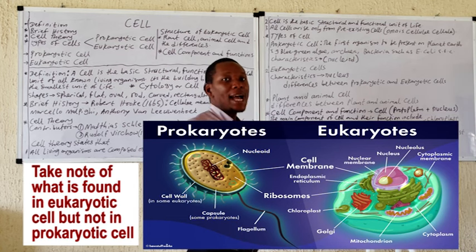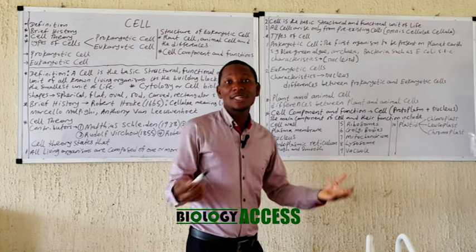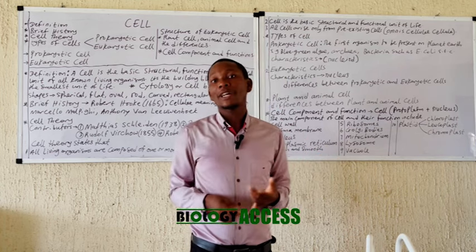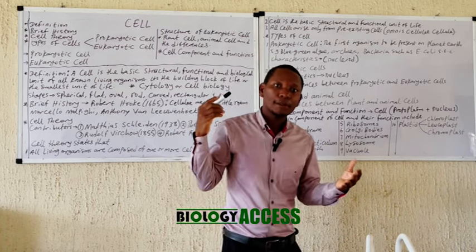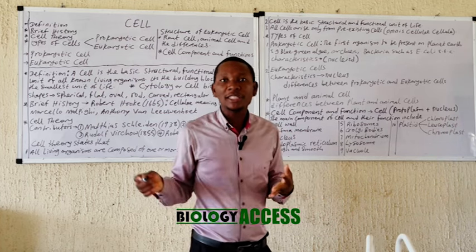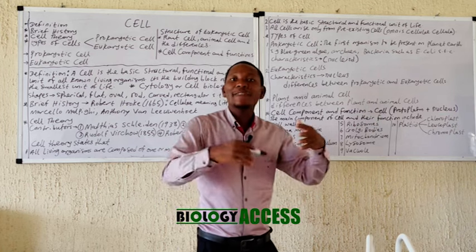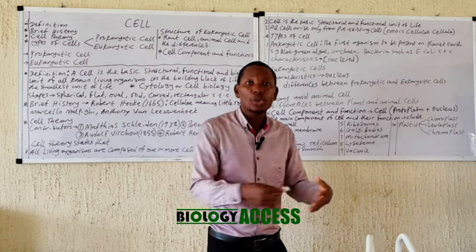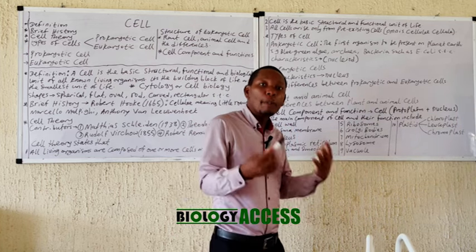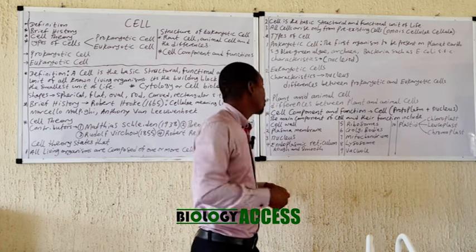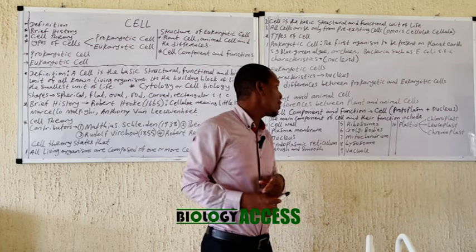Eukaryotic cells are found in various multicellular organisms, including fungi, protozoa, and animals — both vertebrate and invertebrate. These cells can develop and specialize, coming together to form tissues, and tissues coming together to form organs, which make up the body of multicellular organisms.